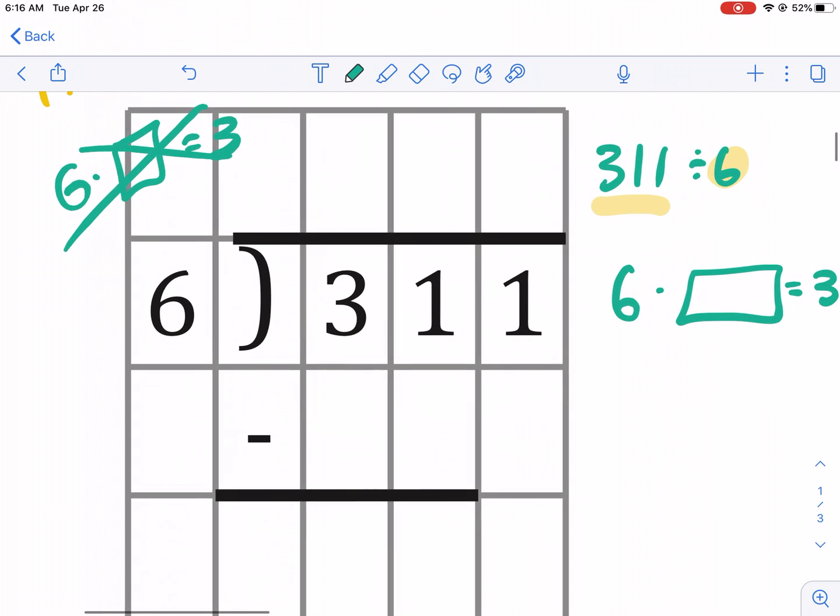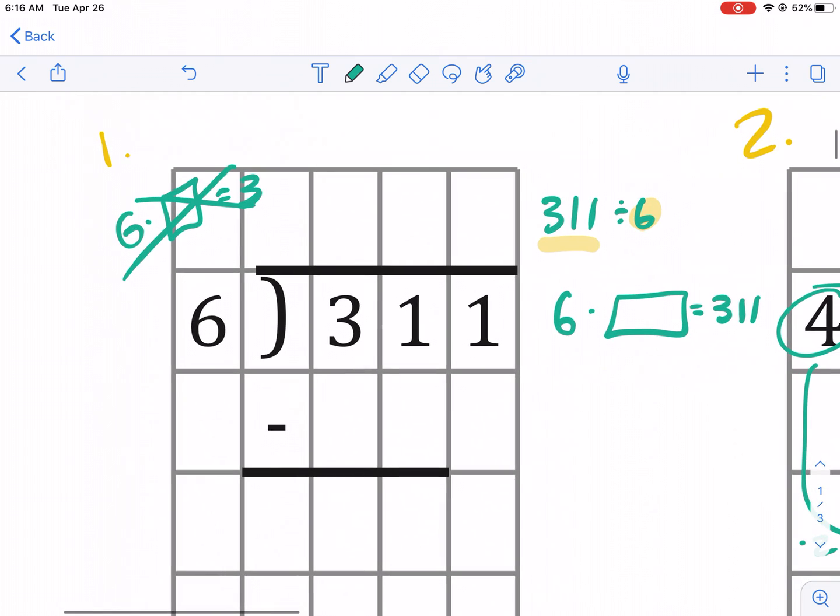So what we're going to do is we're not going to look at the three by itself. We're going to move on to the combined number 31. And six does in fact fit into 31. So that's the process. If it doesn't fit into that first digit, then you're going to extend it. And you're gonna look at two digits instead of just one.